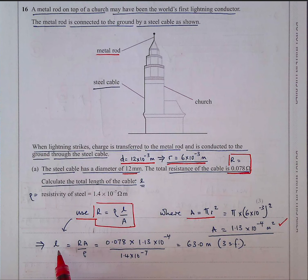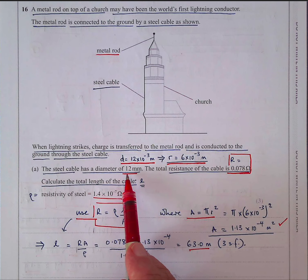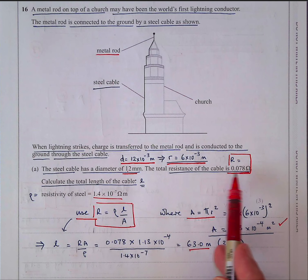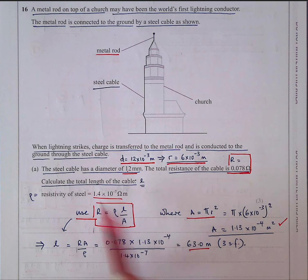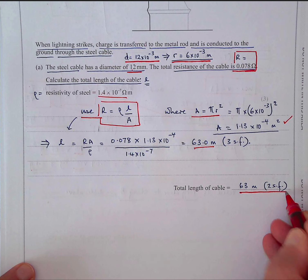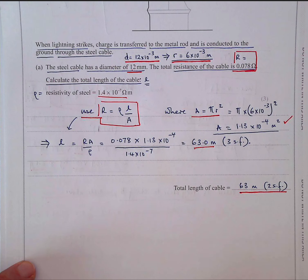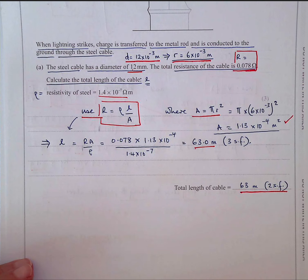Most of the data given to us is two significant figures, so you should really simplify your answer to two significant figures. I have seen examiners take marks off if you've put unnecessary numbers of significant figures. That's question 16 first part done.